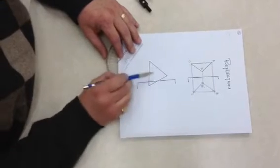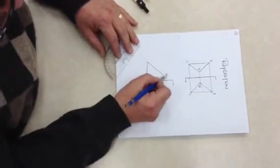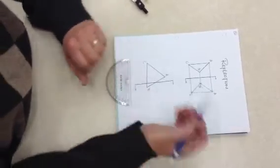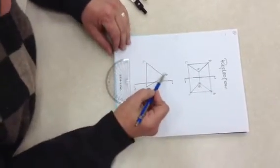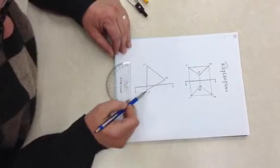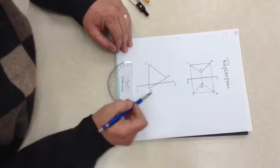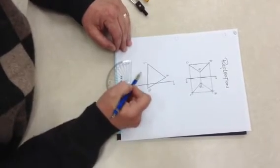When your object goes through the reflection line, we label it the same way: A, B, and C. And we do this exactly the same. But whatever side your vertex is on in the original, it has to be on the opposite side. So A and C are going to be on this side. B is going to be on the other side.